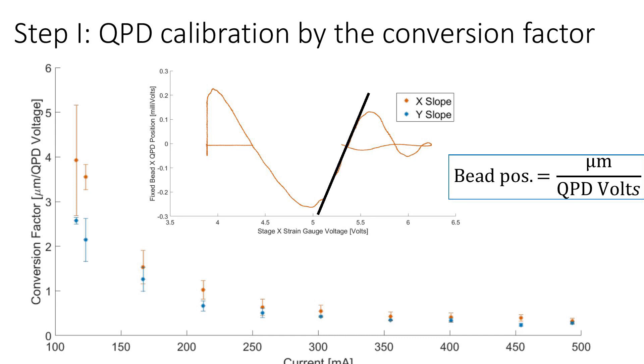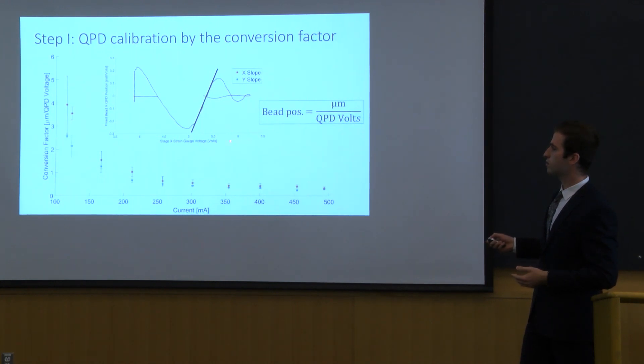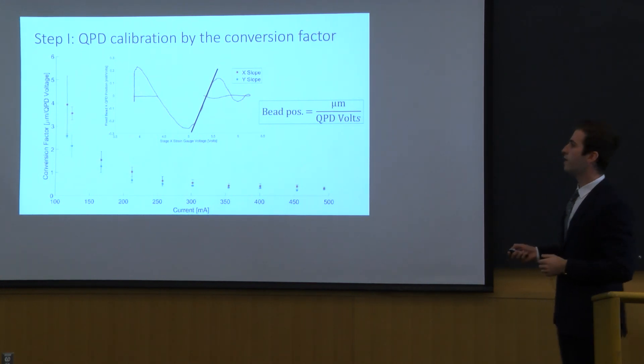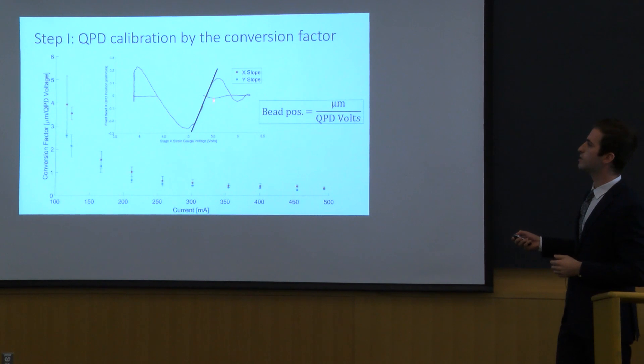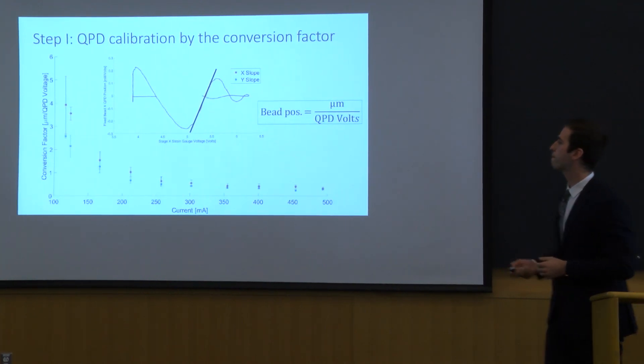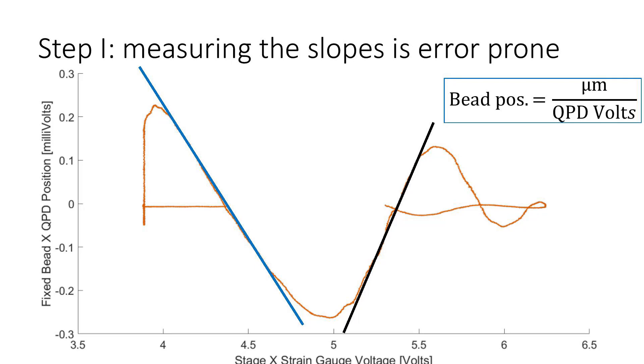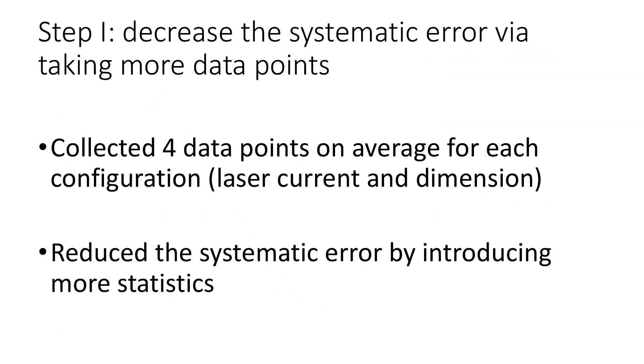So the natural thing to do is to find the calibration that converts these volts into actual distances. Here you can see how we do this. We plot the stage X position. We can plot the stage Y. It's completely analogous to the QPD positions here and the conversion factor hides along these slopes here. Now as you can see we have two different slopes here with different absolute values. This type of measurement is prone to errors. How we approach this problem is that we fault by choosing more data points and trying to increase the statistic thus hopefully reducing the systematics of this measurement.